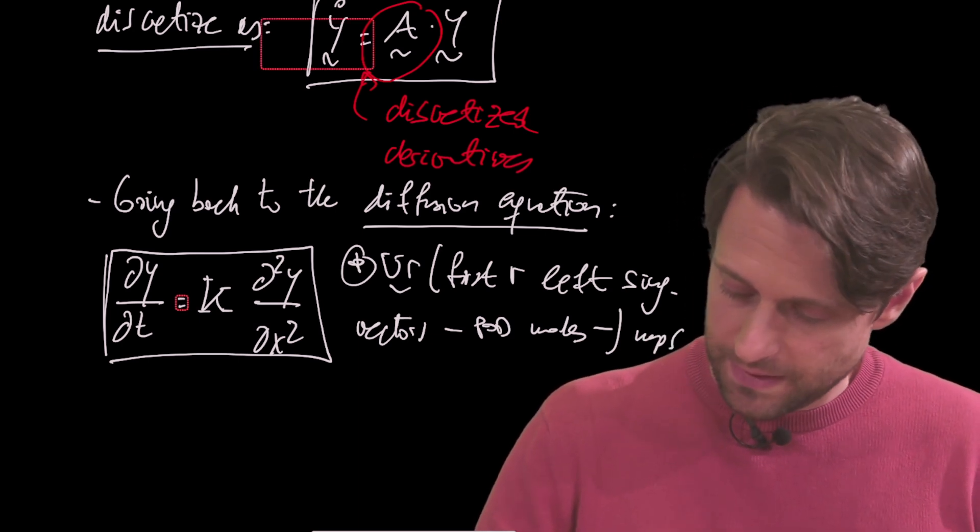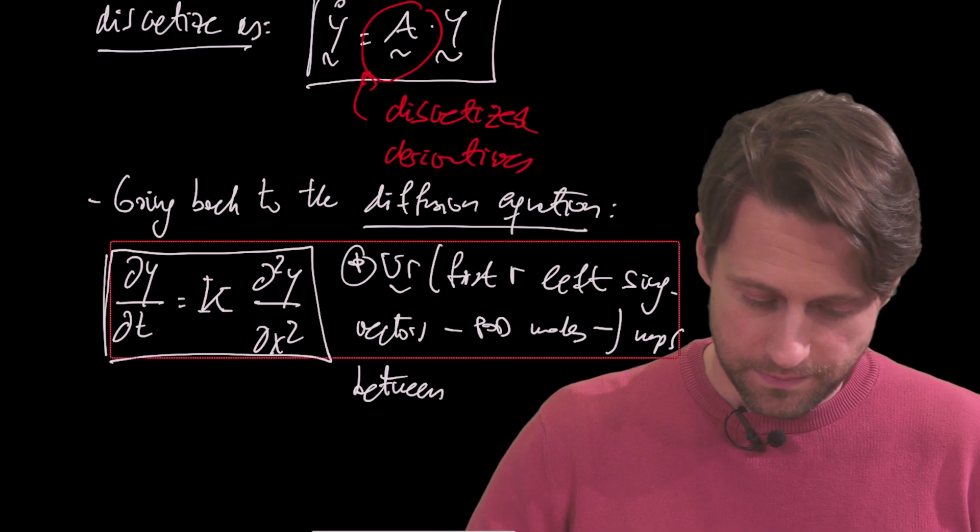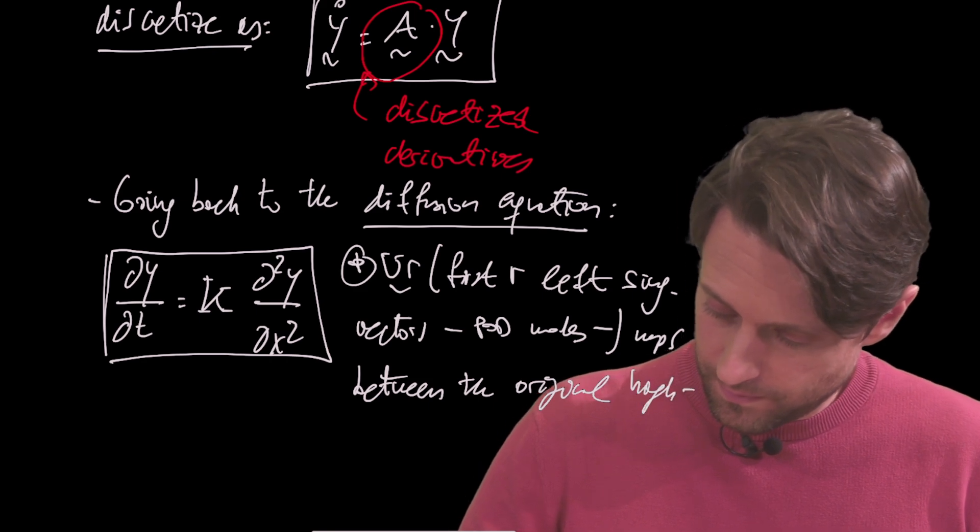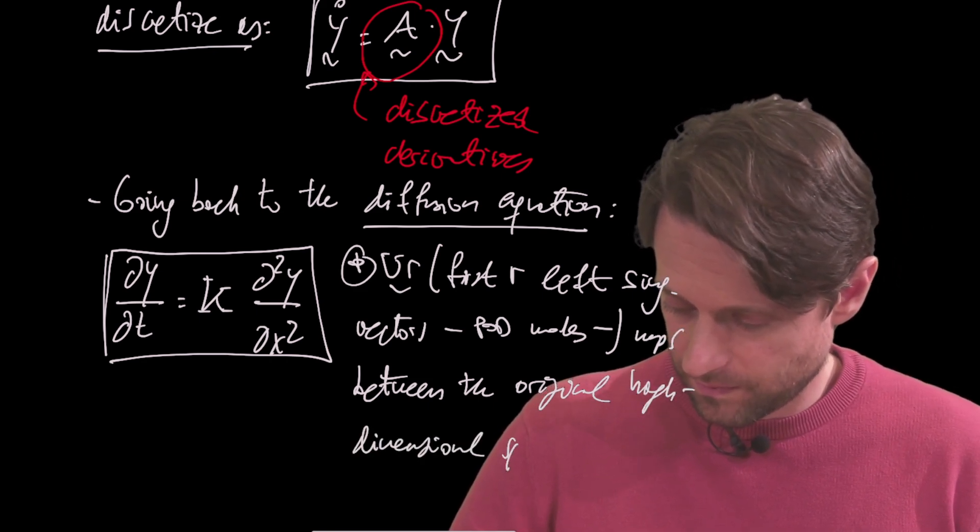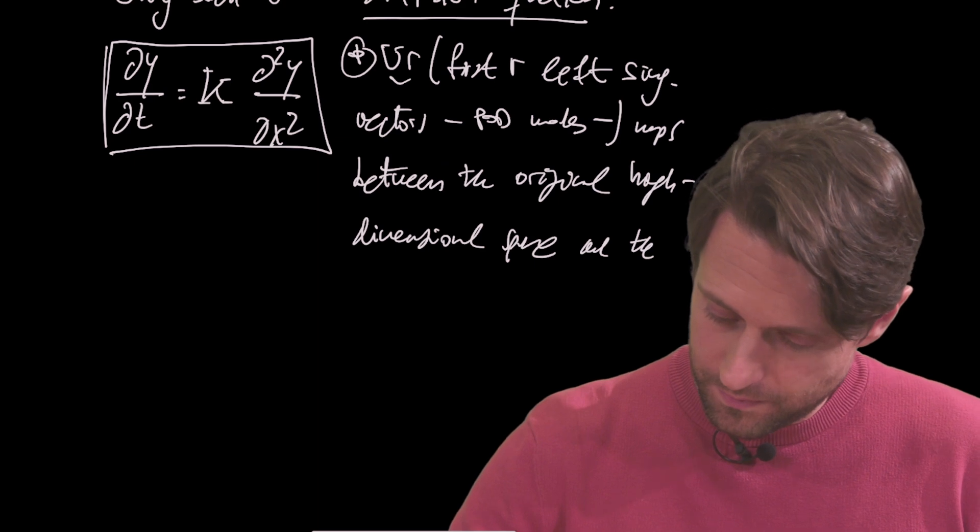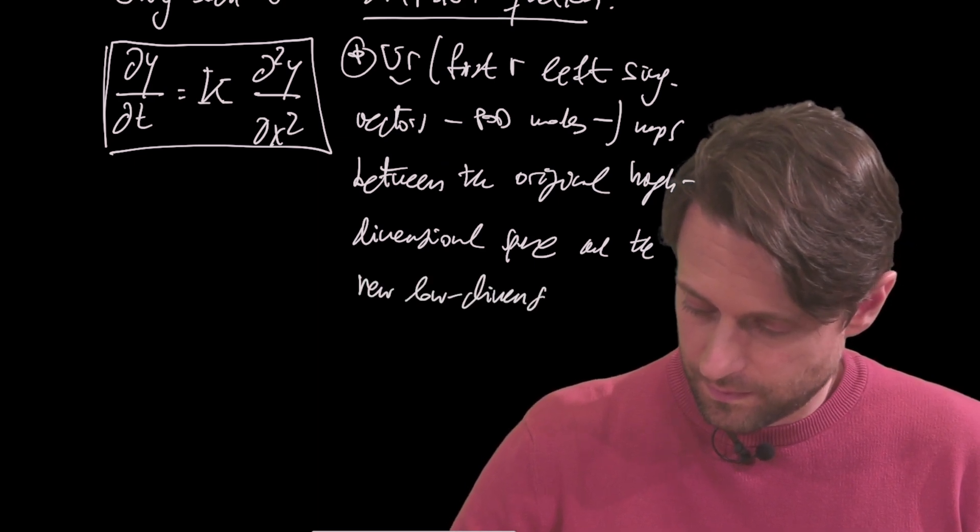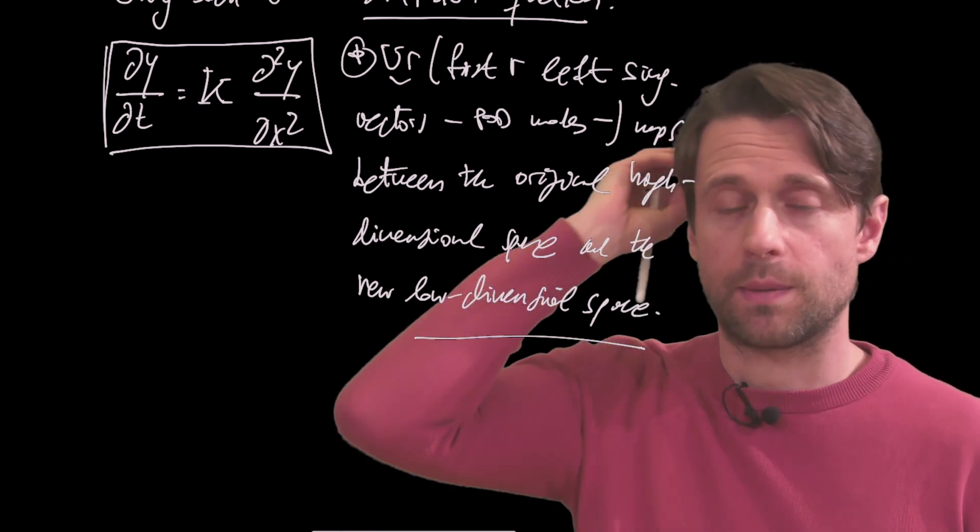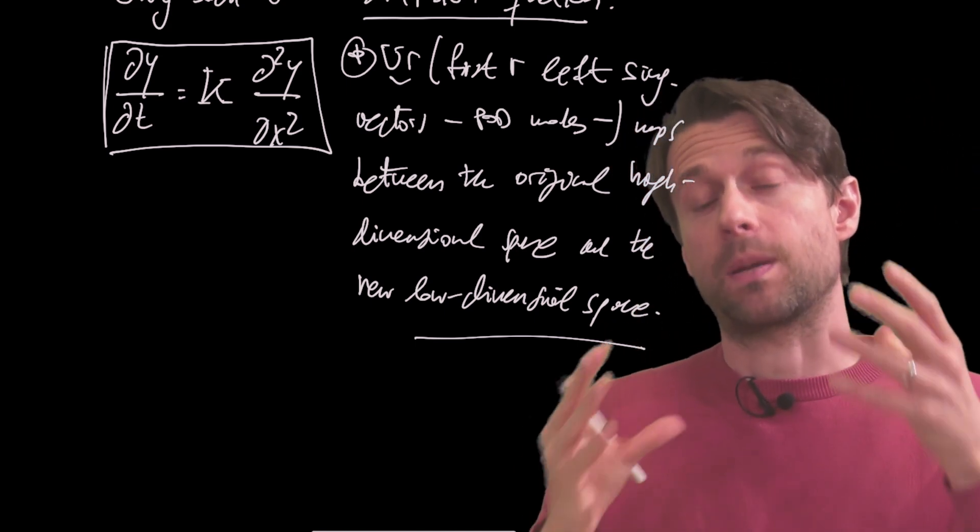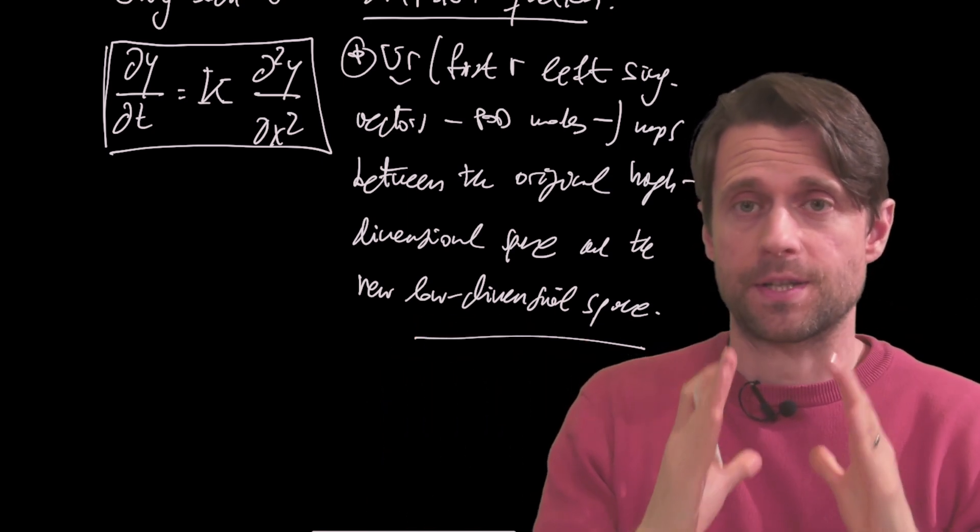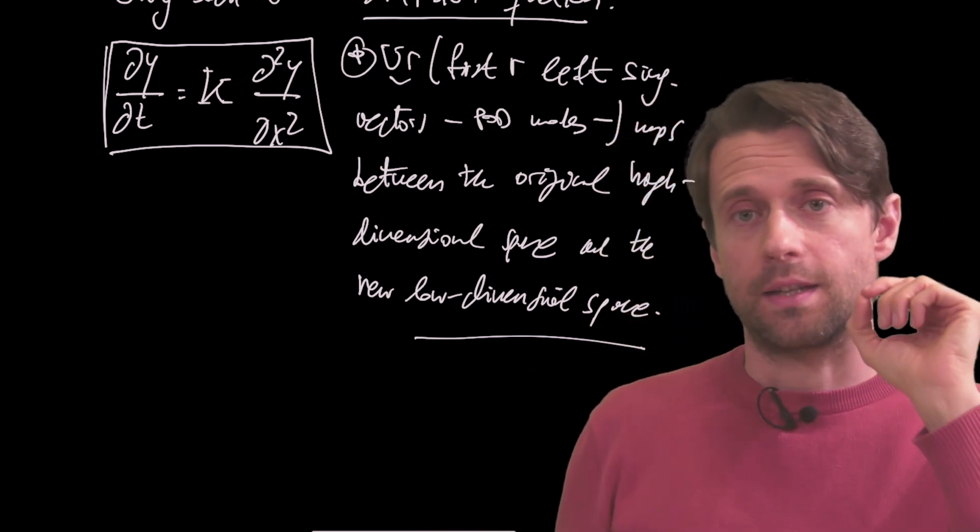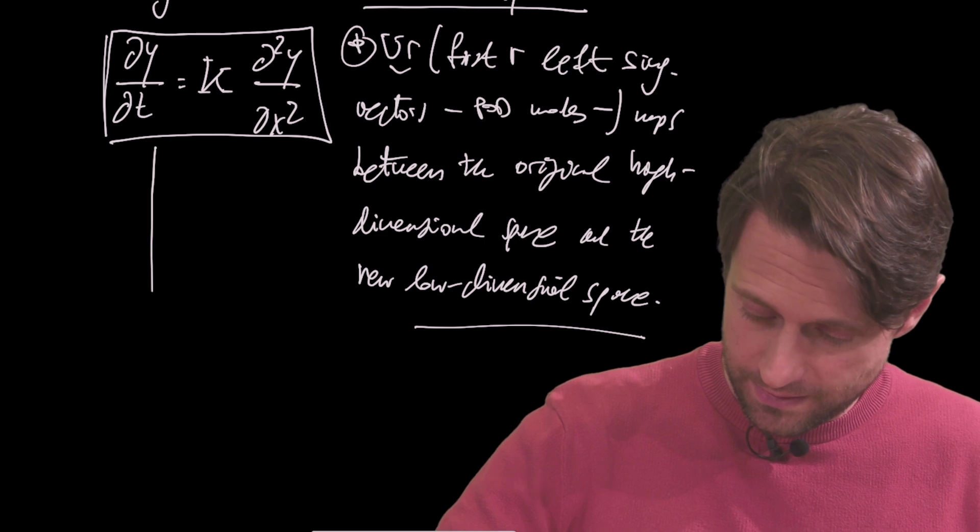So let's look at U_R, which are the first R left singular vectors, also POD modes. This maps between the original high-dimensional space and the new low-dimensional space. So this is consistent with what we talked about in the previous video. Now we're going to apply it in a practical example. So going back to the diffusion equation, remember that the U_R matrix contains the left singular vectors, those are the POD modes. We just take the first R, they're sorted by descending order. So these are the ones that contribute the most to the reconstruction of the original signal. And then we can take the governing equation and discretize.